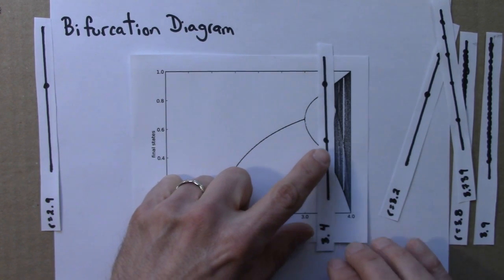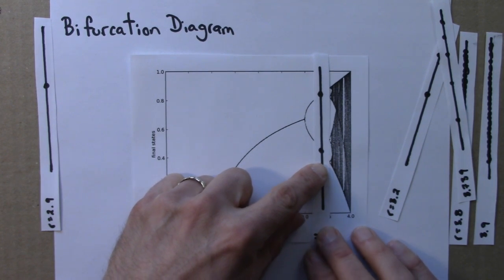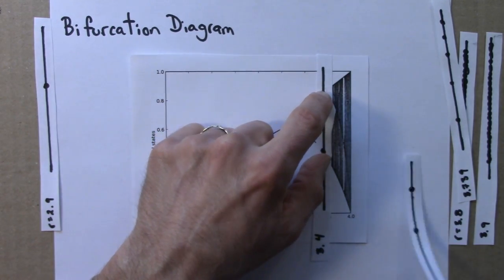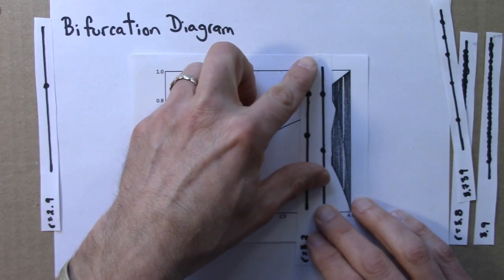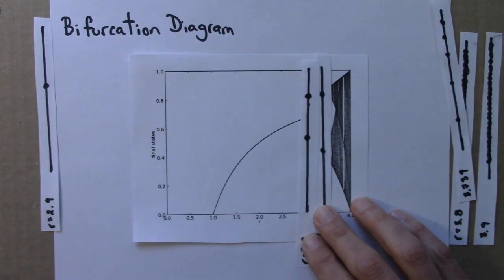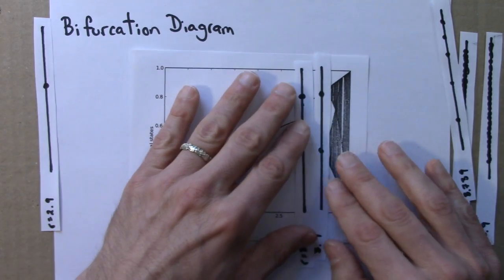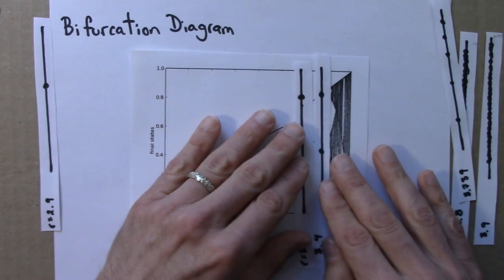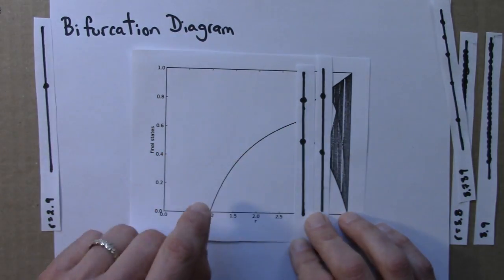Here's another R value, a little bit larger, 3.4. And still period 2, there are only two dots, but the periods are a little bit farther apart. Let's see if I can get both of these on at the same time. So for these two different values, it's the same qualitative behavior, attracting cycle of period 2, but the exact locations are a little bit different.